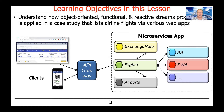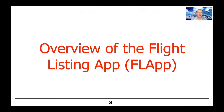The particular case study we're going to focus on can be used to list airplane flights via various apps that are connected over the web. You could connect through a browser, or through an Android phone. We actually have a nice Android client that looks like the Southwest Airlines flight listing and booking app. We're going to use this as a running example throughout the course.